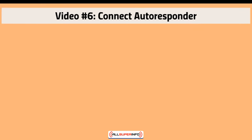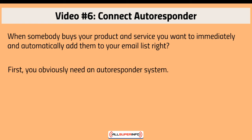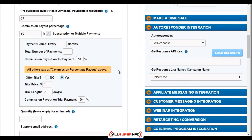This is video number six: connecting your autoresponder. When somebody buys your product or service, you want to immediately and automatically add them to your email list. First you obviously need an autoresponder system, but before we discuss that, let's take a look at the JVZoo platform and see which ones are compatible, what you need to do to connect them, and what information you need. If we refer back to our edit product details and go under the autoresponder integration, you can see the compatible ones.